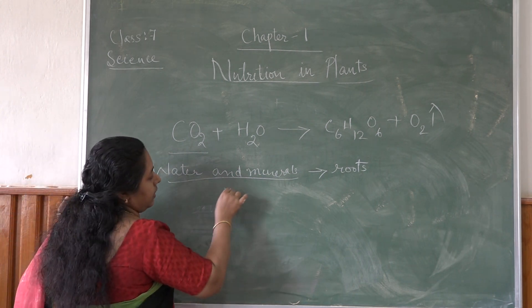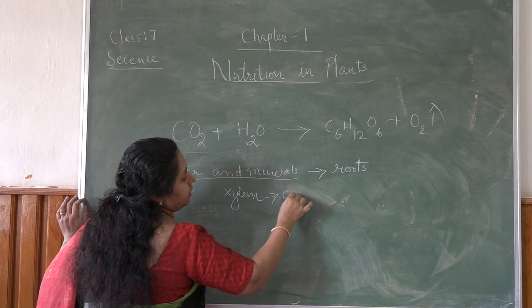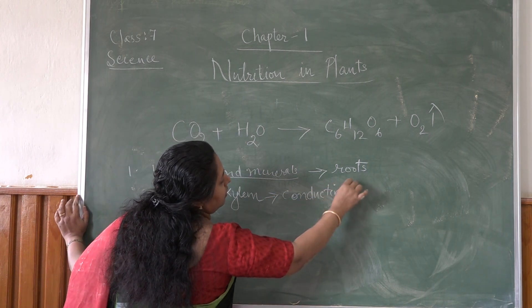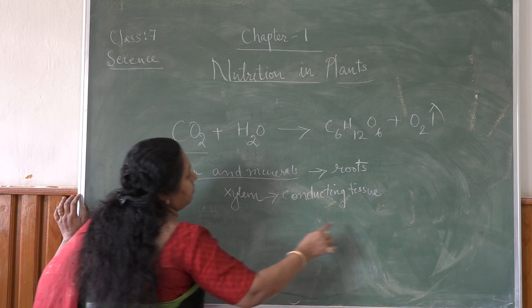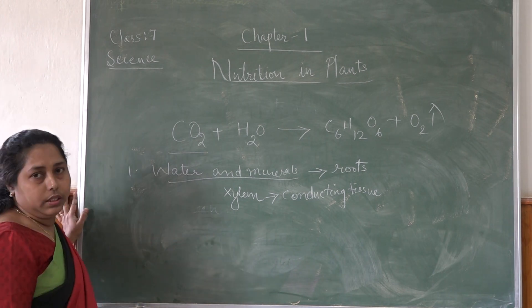Then xylem. Xylem is a conducting tissue. Through this conducting tissue, the water will be absorbed by the plants and it is carried towards the leaves.